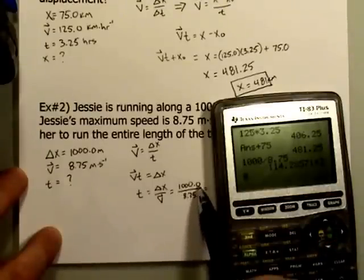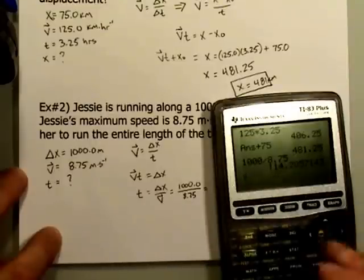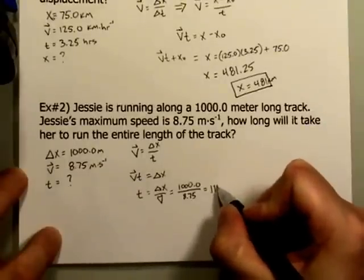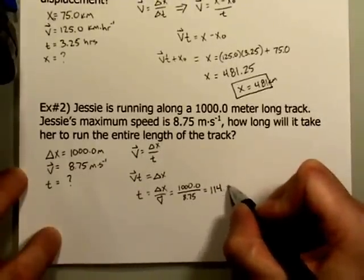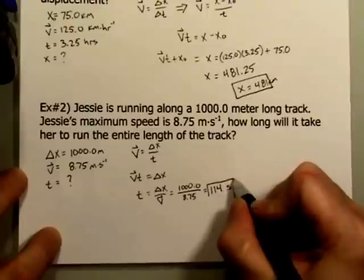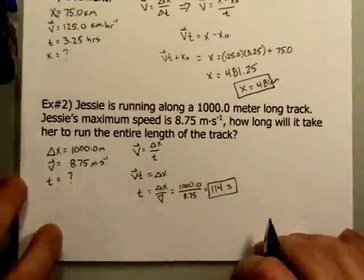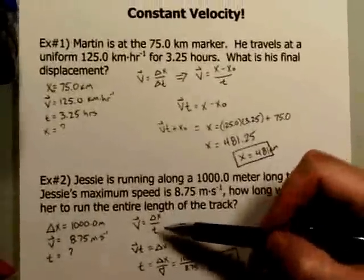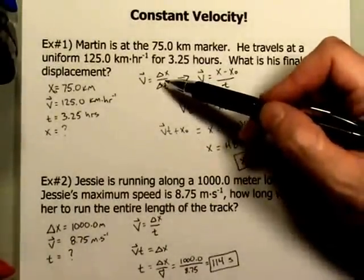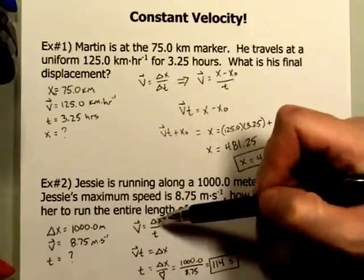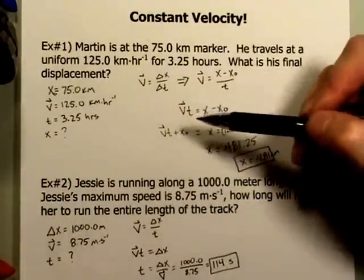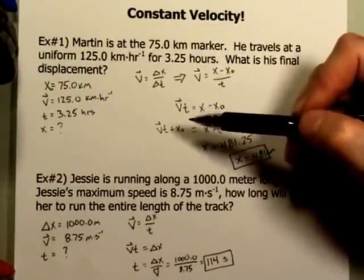I had five significant figures here, I have three here, so I'm only going to keep the first three numbers. That would be 114 seconds. Just extremely crucial that you recognize that even though formulas you are given are formulas for the average of that quantity, those average formulas can be as good as the instantaneous velocity formula as long as the speed does not change or the velocity does not change during the entire course of the question.